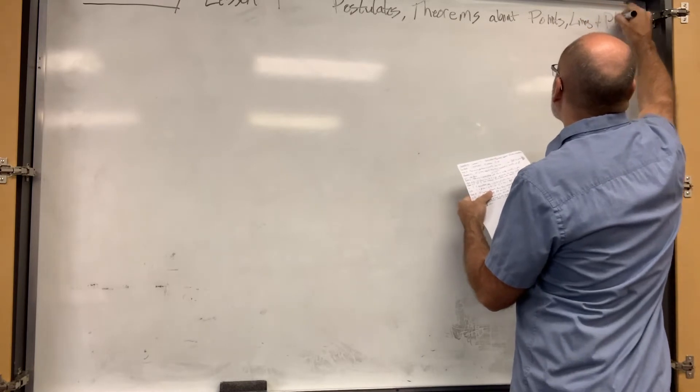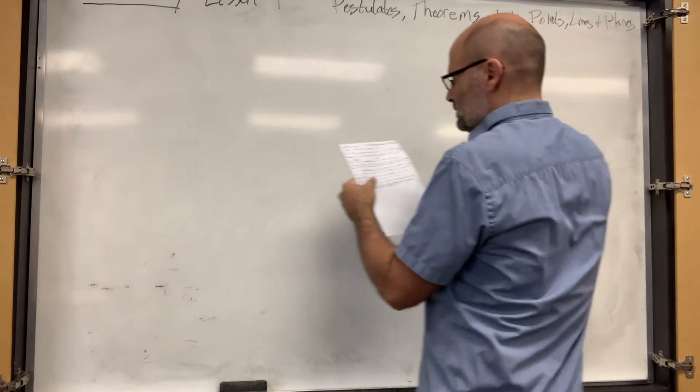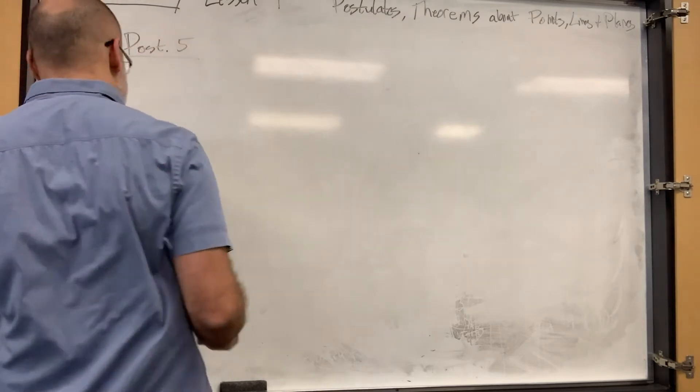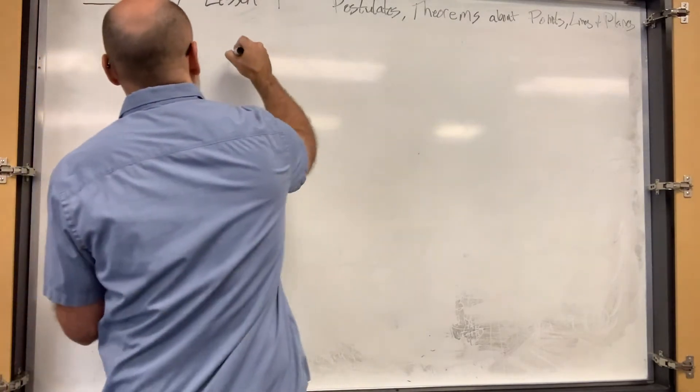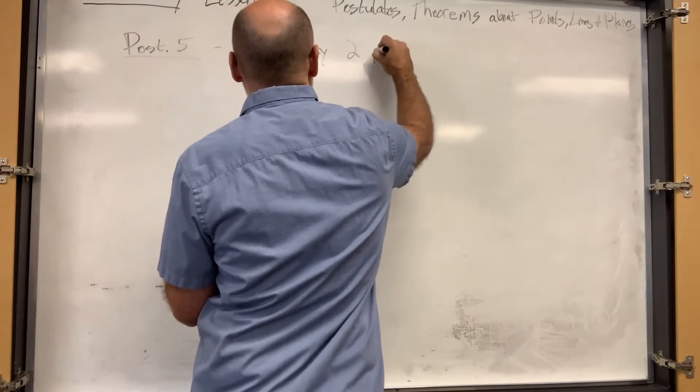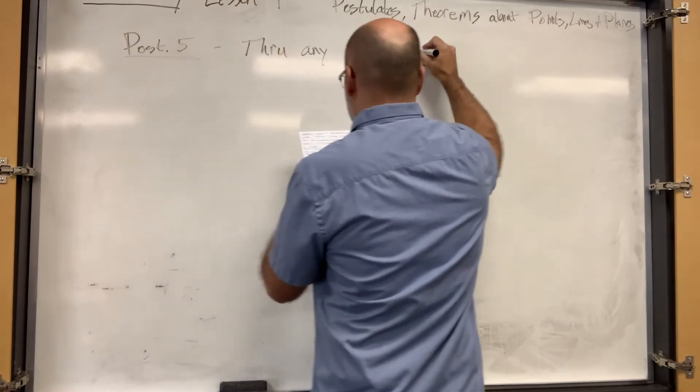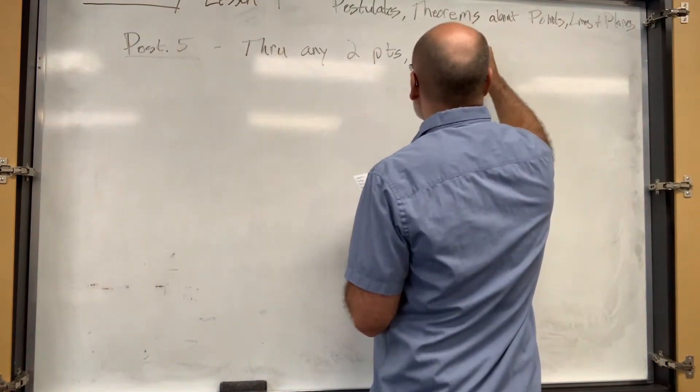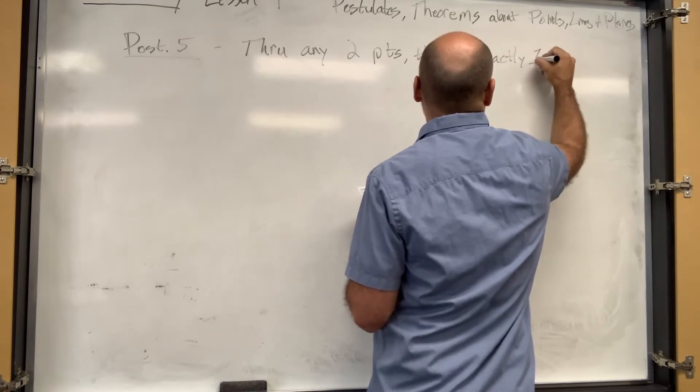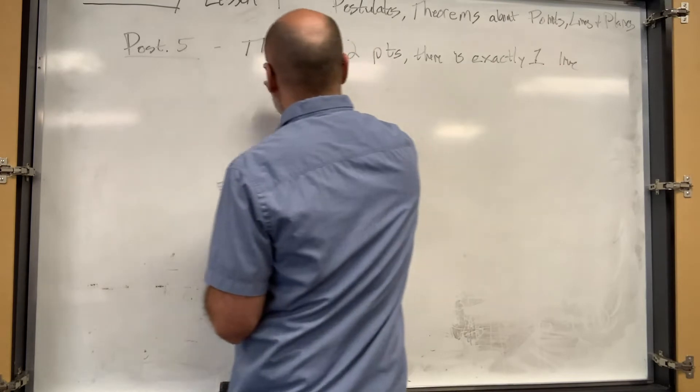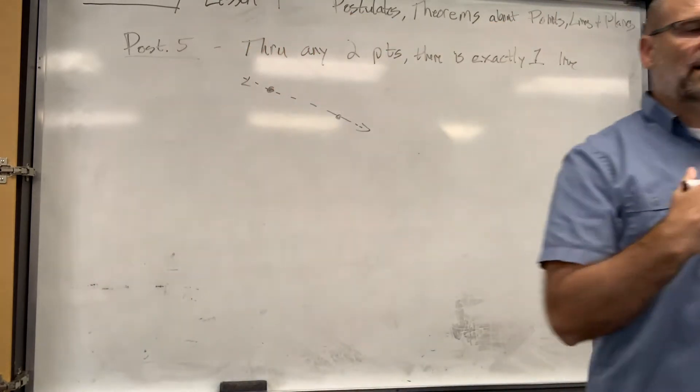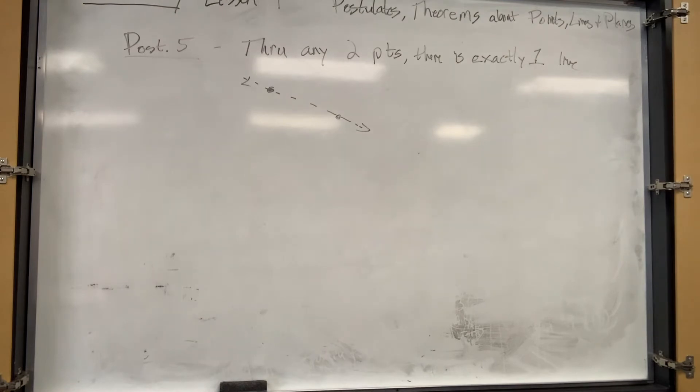Postulate five. When I say P-O-S-T, that means postulate. Postulate five: through any two points in the universe, there is exactly one line. You can't draw two lines between two points. Exactly one line. Anywhere you can only draw one line through it. You can't draw any other line than that one through those two points. That's postulate five.